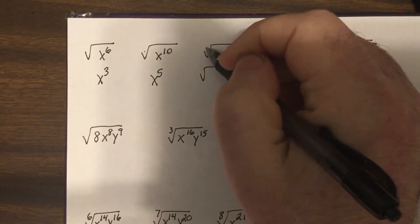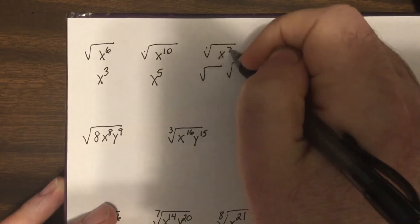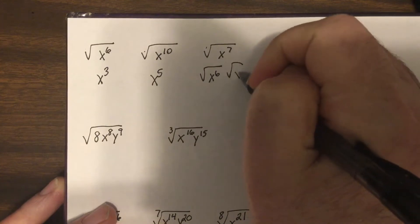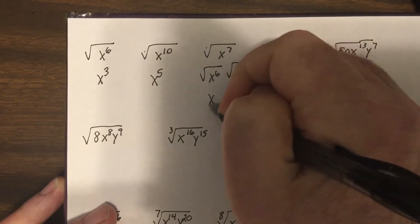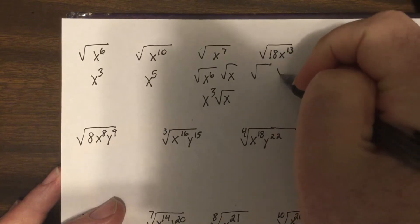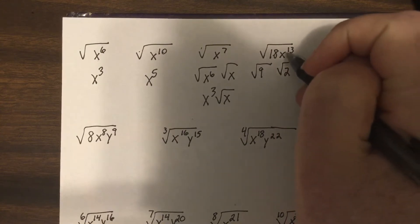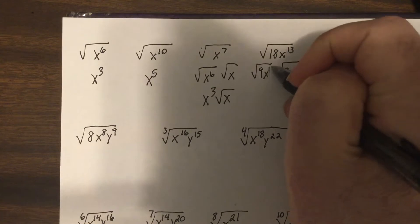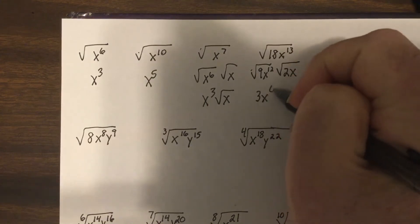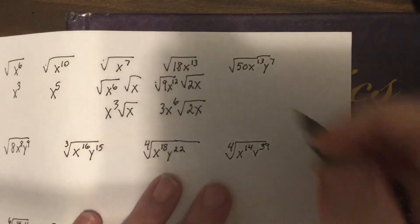When the exponent isn't evenly divisible by the index, we break it into two parts: the largest perfect square portion and the leftover. For example, the square root of X to the 7th — we break it into X to the 6th times X, giving us X cubed times the square root of X. For 18X to the 13th, we break it into 9 times 2 and X to the 12th times X, giving us 3X to the 6th times the square root of 2X.